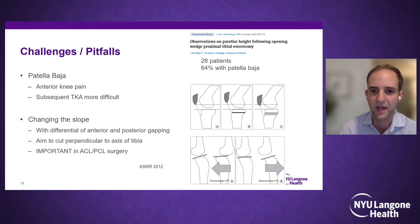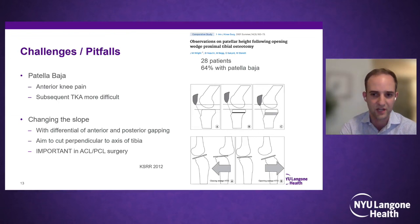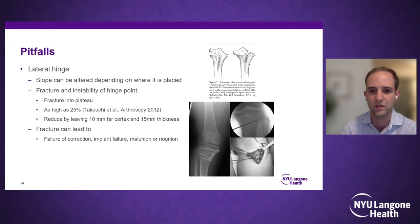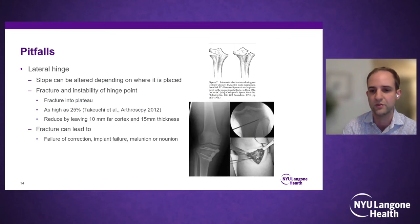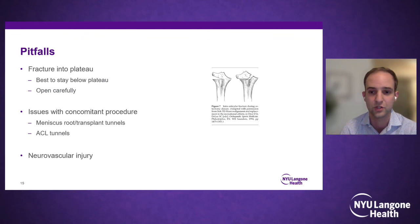Opening wedge osteotomies can create patella baja or raise the joint line, leading to anterior knee pain and making subsequent total knee arthroplasty more difficult. Additionally, slope can be inadvertently changed if the osteotomy is not made in the mid-sagittal line or perpendicular to the tibial axis. Maintaining a lateral hinge can be challenging — fracture of this hinge point has been reported in up to 25% and can lead to failure of correction, implant failure, or non-union. Hinge fracture can also propagate into the joint itself.